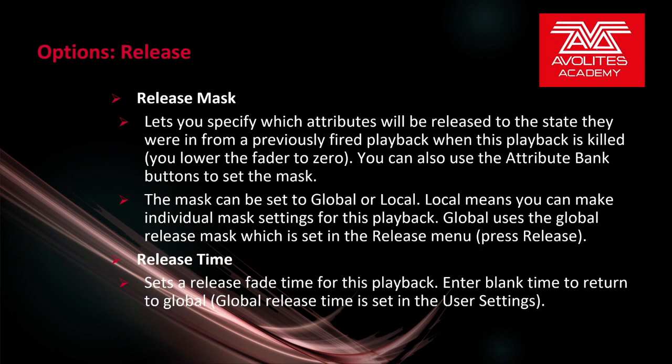Under the Release tab, we have Release Mask, which specifies which attributes will be released to the state they were in from a previously fired playback when this playback is killed - when you lower the fader to zero. You can also use the attribute bank buttons to set the mask. The mask can be set to global or local. Local means you can make individual mask settings for this playback. Global uses the global release mask, which is set in the release menu by pressing Release. Release Time sets the release fade time for this playback. Enter play time to return to the global. Global release is set in user settings.